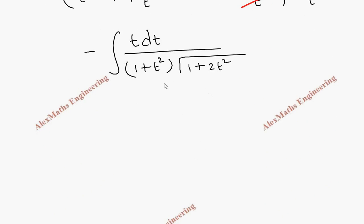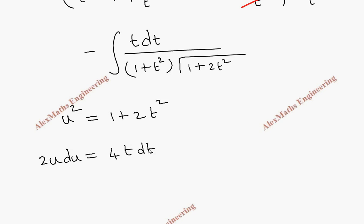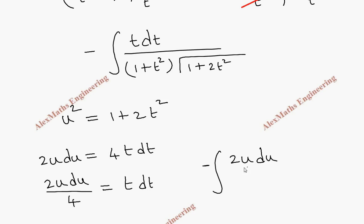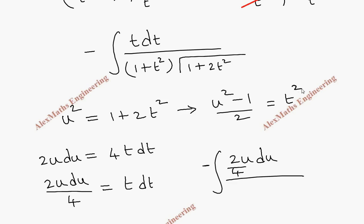We take the term inside the square root as u², so u² equals 1 plus 2t². Differentiating: 2u du equals 4t dt, so t dt equals 2u du by 4. Substituting, t² equals u² minus 1 by 2. So 1 plus t² becomes u² minus 1 by 2. The entire square root term becomes u, and we cancel u.